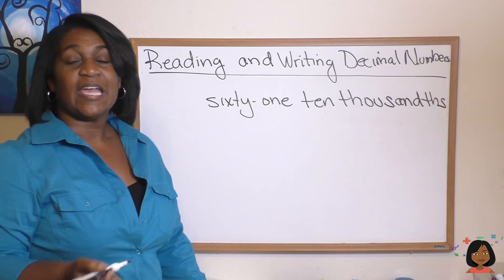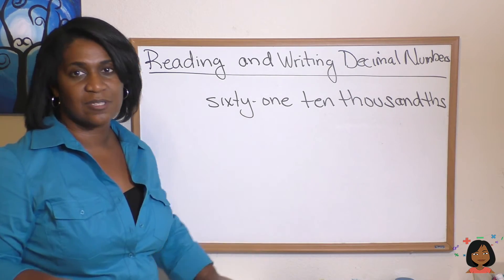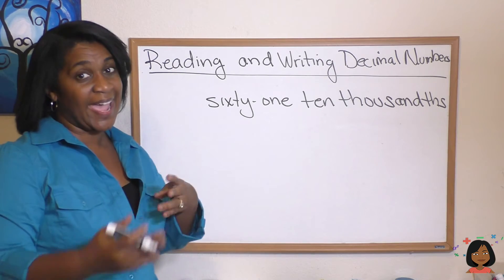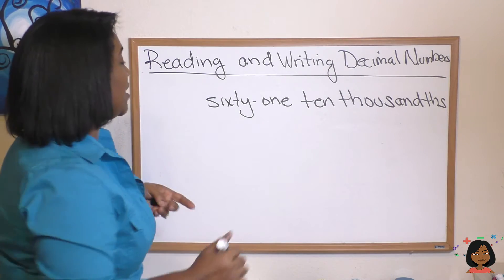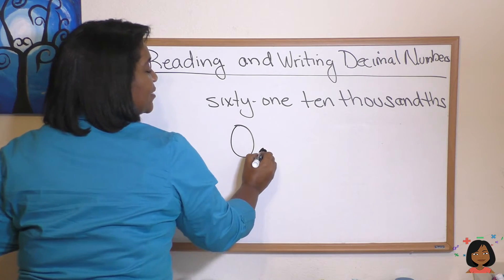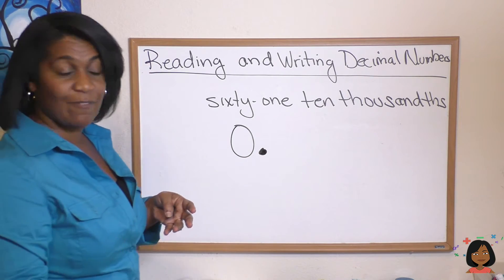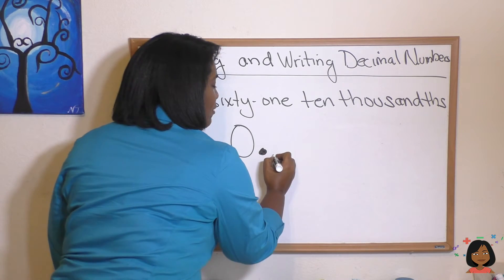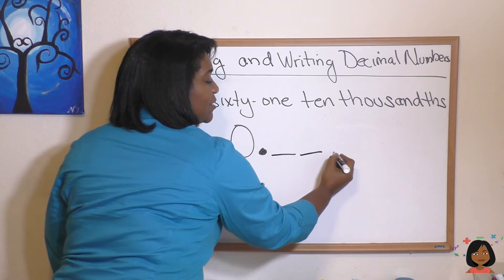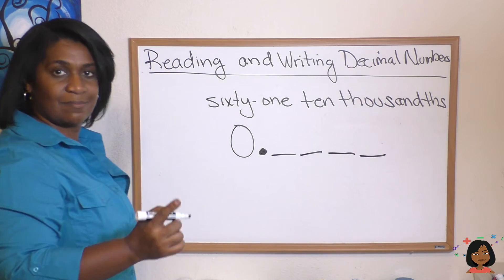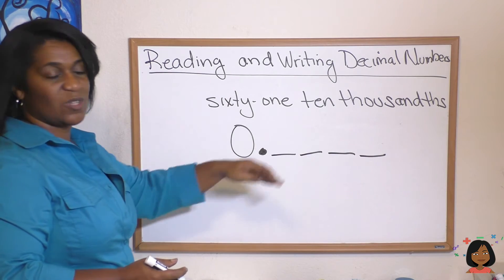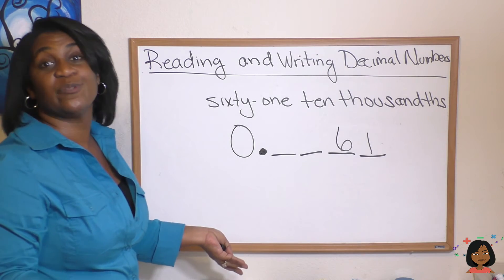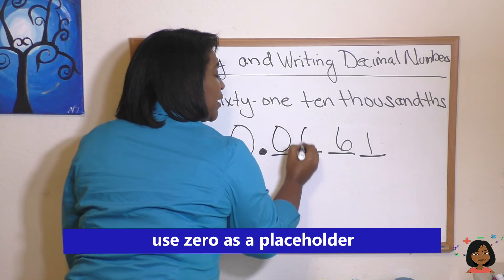One last example: '61 ten-thousandths.' Is this a mixed number? No, it's not, because we don't see the word 'and' anywhere — so we're just writing the decimal portion, which means we start with a zero and a decimal point. For 61 ten-thousandths, we go out to the ten-thousandths place: tenths, hundredths, thousandths, ten-thousandths. Our number 61 goes to the far right, and we use zeros as placeholders in the two empty spaces — giving us 0.0061.